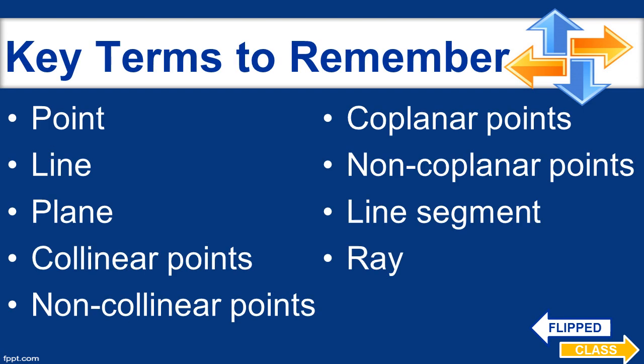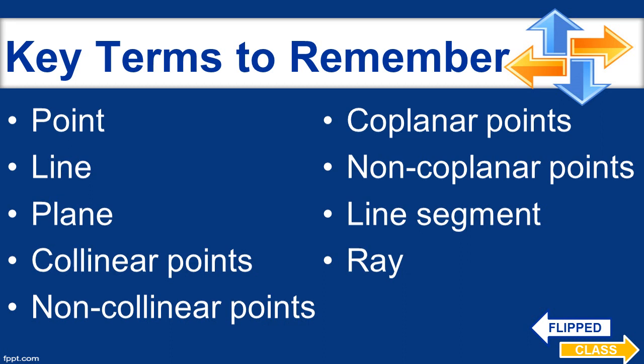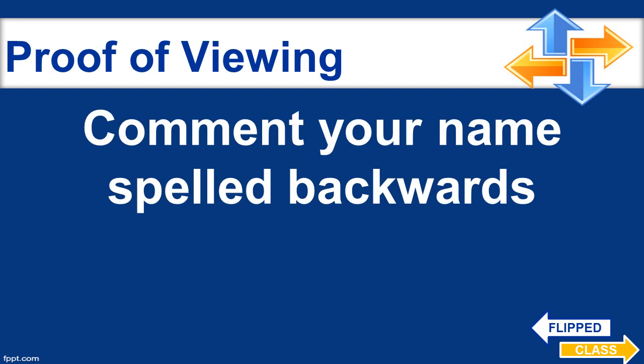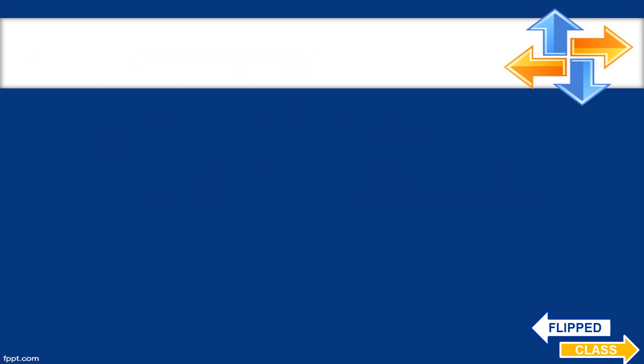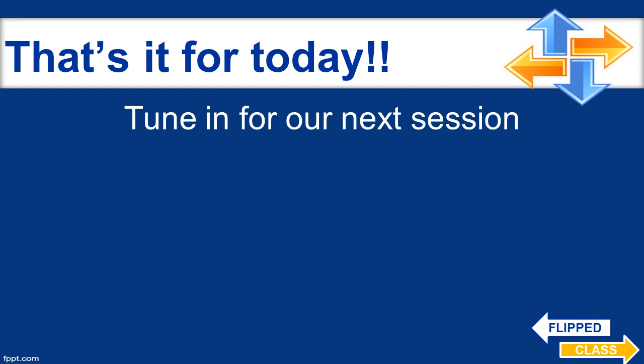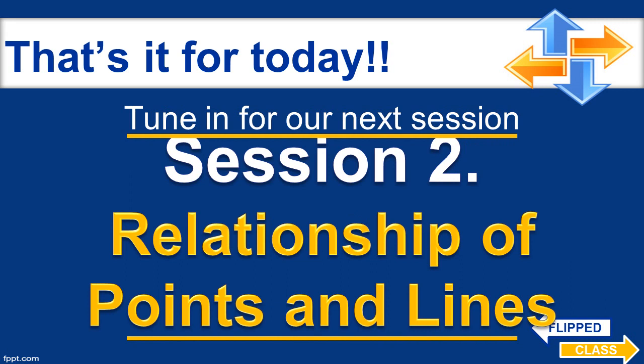That's a wrap for today. These are the key terms you need to remember: point, line, plane, collinear and non-collinear points, coplanar and non-coplanar points, and the two subsets of a line — line segment and ray. These are our important concepts for this session. If you viewed this video, please go to your Schoology group and comment your name spelled backwards before the next session, and you will be given points for that. You can review this video anytime. See you next session — session two will be on relationships of points and lines.